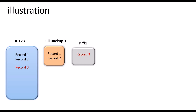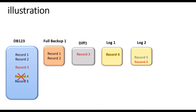Then I am going to insert one more record and take a log backup. That log backup contains the fourth record. After that I insert record five, and then record four has been deleted — knowingly or unknowingly. Thereafter another log backup has been performed, which is my log 2 backup. This log 2 backup contains record five along with the delete transaction of record four.